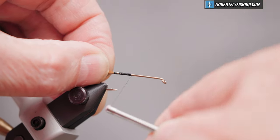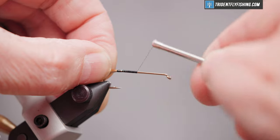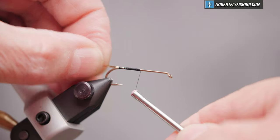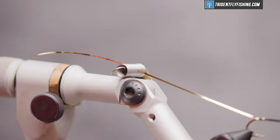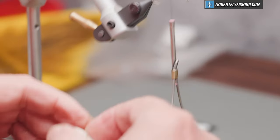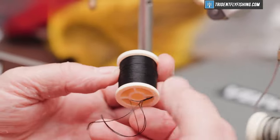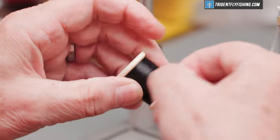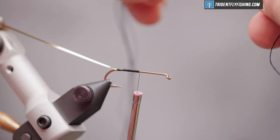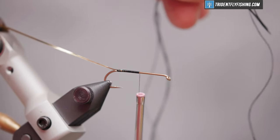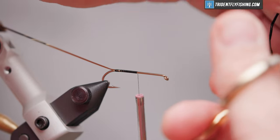We're going to run this about halfway up the hook shank where we'll tie in our body material. That looks about right. Next we're going to tie in Danville's four-strand floss in black. It's a little easier to work with if you wet your fingers to start with. Cut this off and get it even.